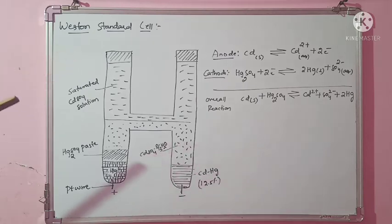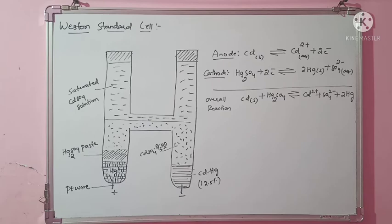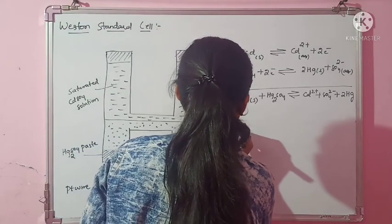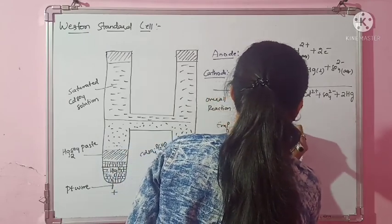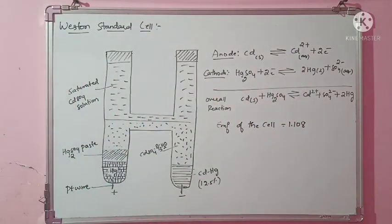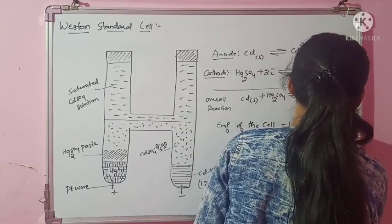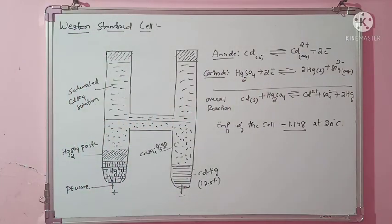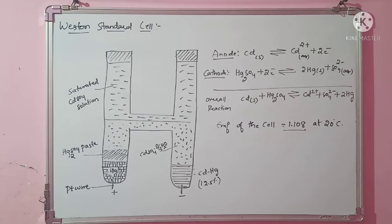Near cadmium, oxidation takes place and it acts as the anode. The cathode is mercurous sulfate (Hg₂SO₄), where reduction takes place. The EMF of this cell is 1.108 V, observed at 20°C. This EMF does not change significantly with temperature, which is why this cell is taken as a standard cell. This covers the explanation of the standard cell, cathodic and anodic reactions, overall reaction, and EMF of the Weston standard cell.